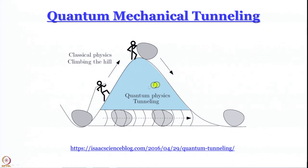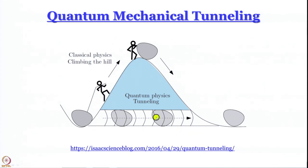The situation is like a cartoon available on the internet: in the classical world we push a stone up and over a small hill — we have to surmount the energy barrier. In the quantum world, as suggested by the alpha particle experiment, a quantum particle can tunnel through it, as if there is a tunnel, so you go from here to here without going up the hill.